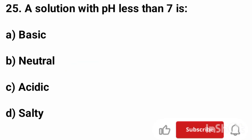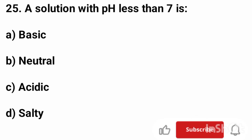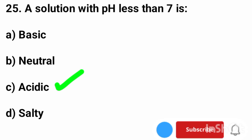Question number 25. A solution with pH less than 7 is? The correct answer is option C, acidic.